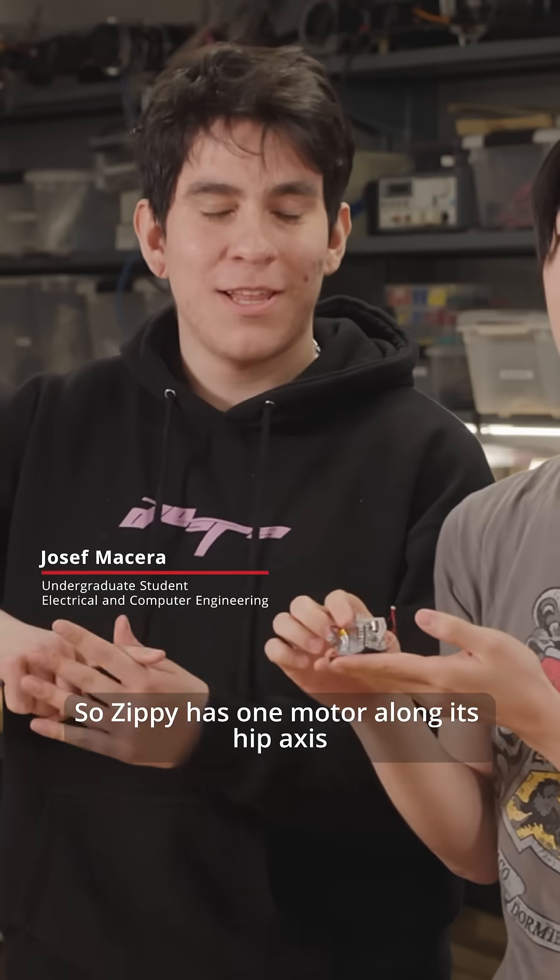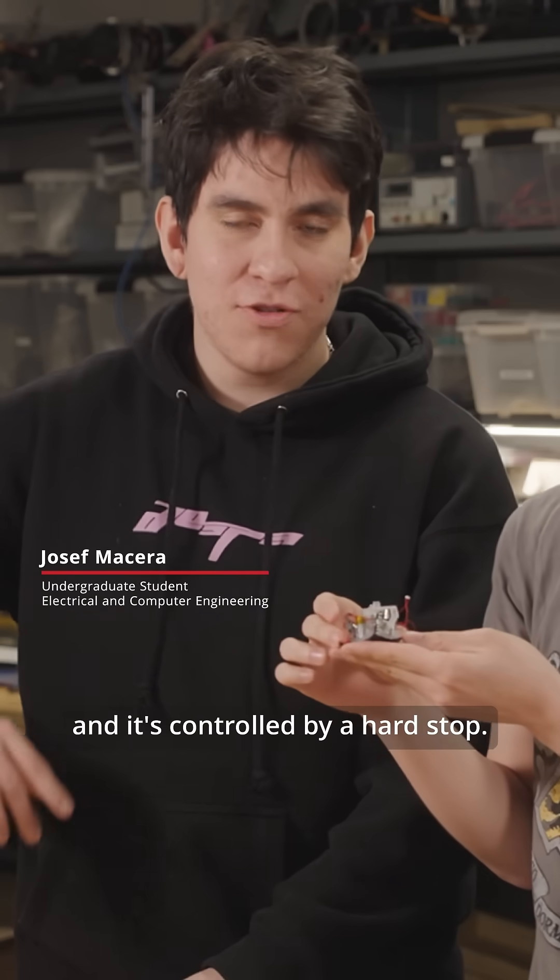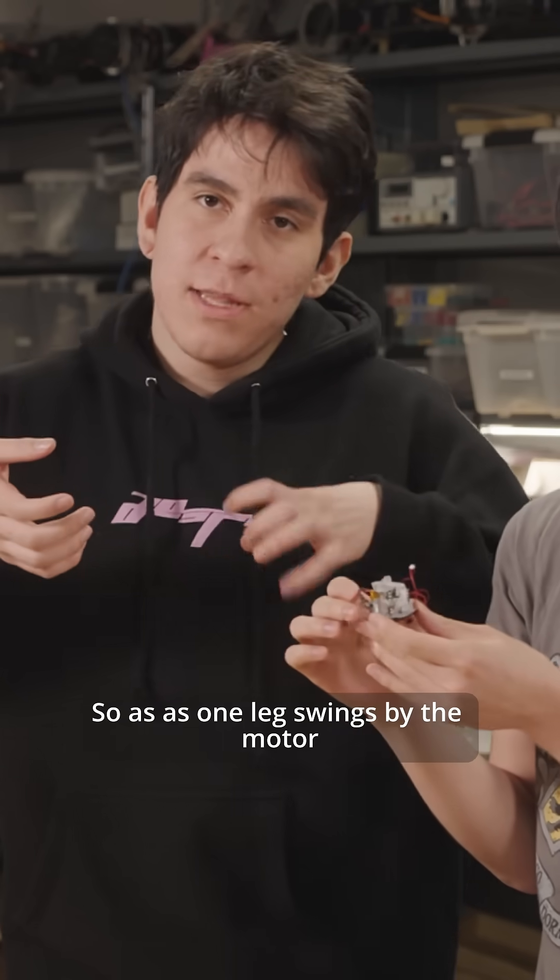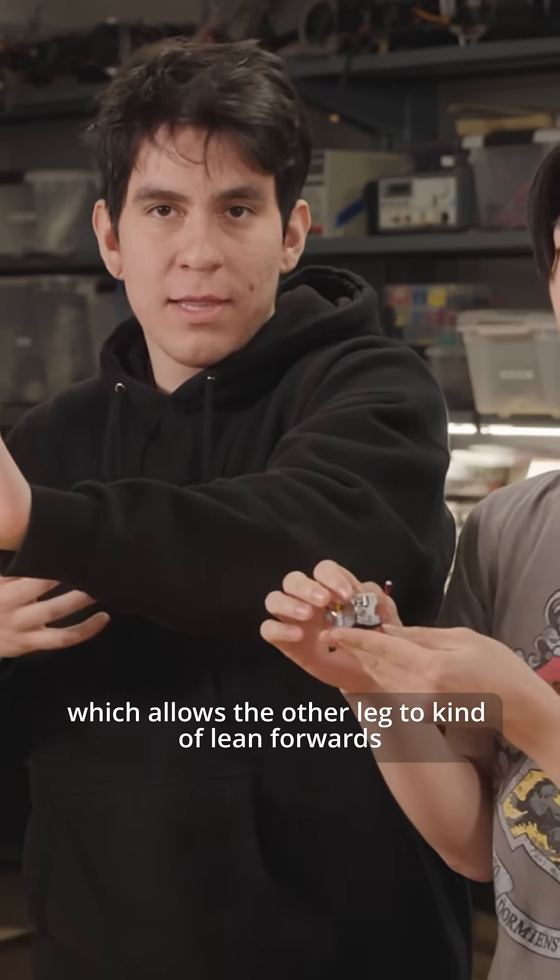So Zippy has one motor along its hip axis and it's controlled by a hard stop. So as one leg swings by the motor, it reaches the hard stop, which allows the other leg to kind of lean forwards and swing forwards as it walks.